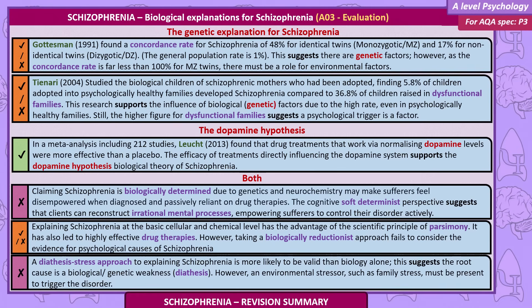Tienari, 2004, studied the biological children of schizophrenic mothers who had been adopted, finding 5.8% of children adopted into psychologically healthy families developed schizophrenia, compared to 36.8% of children raised in dysfunctional families. This supports the influence of biological factors due to the high rate even in healthy families, but the higher figure for dysfunctional families suggests a psychological trigger is also a factor.